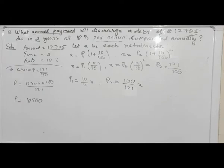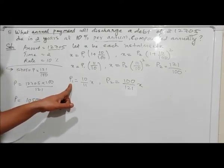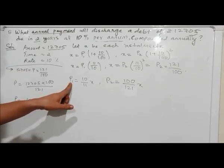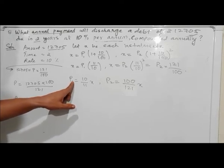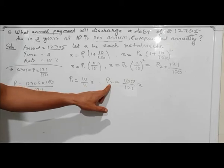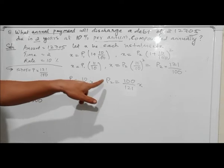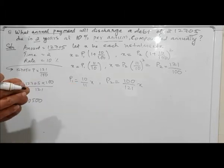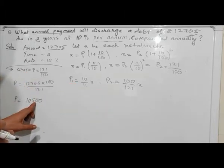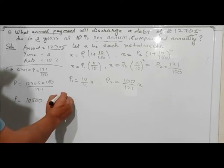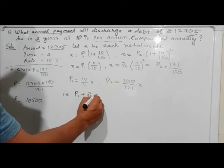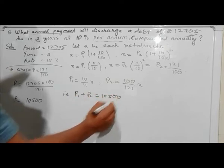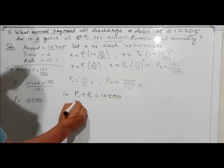So the principal — substituting principal 1 and principal 2 — both are expressed in terms of x. Adding principal 1 plus principal 2, the combined total equals the original debt amount.